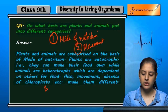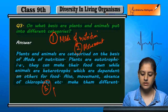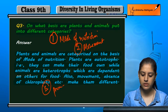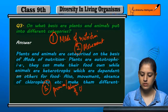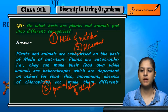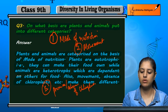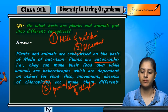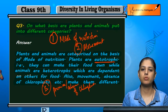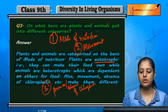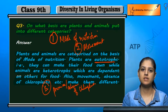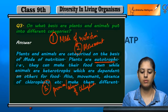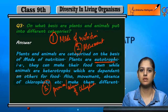The third criteria is the presence and absence of chloroplasts. Chloroplasts are present in plants because they are autotrophs — they can prepare their food themselves. Animals do not have chloroplasts. These are some criteria on which we can categorize plants and animals.